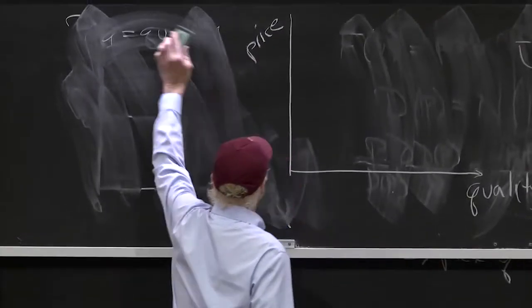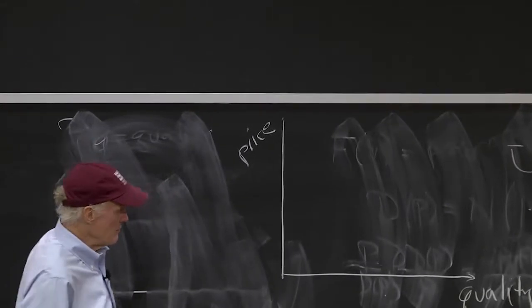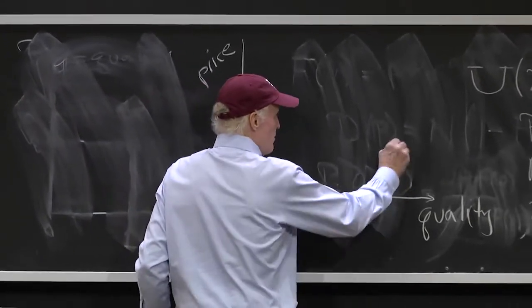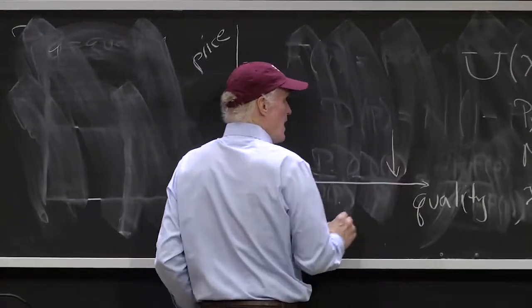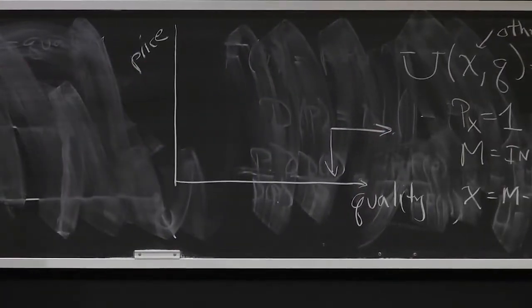So, if that's the price quality spectrum, what do preferences look like? Well, in general, people prefer lower price, and they prefer more quality.